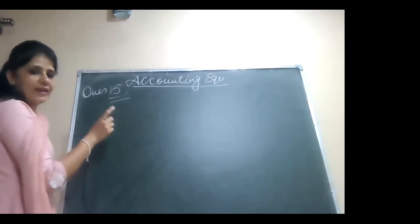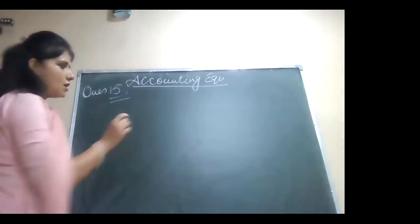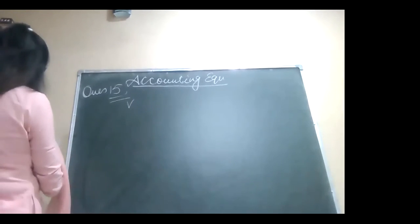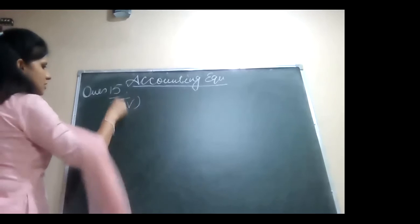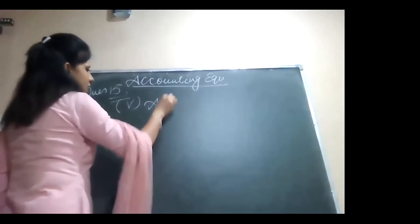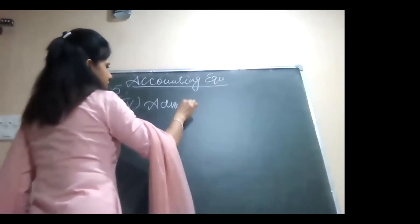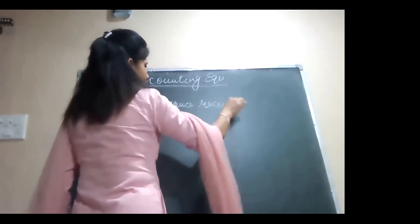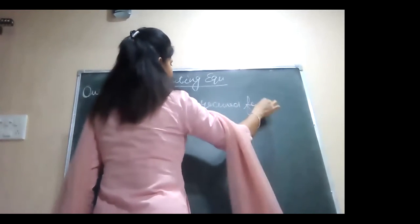Continue with the 15th question of back exercise. George started a business. We have to do today the last two points, that is the 5th point. The 5th point says advance received from a customer.